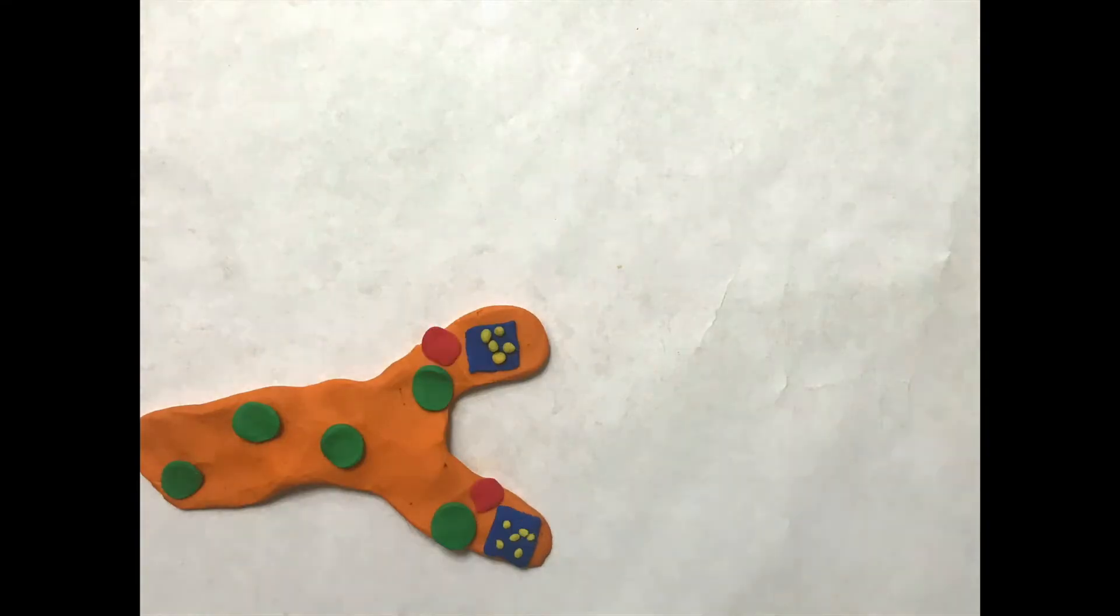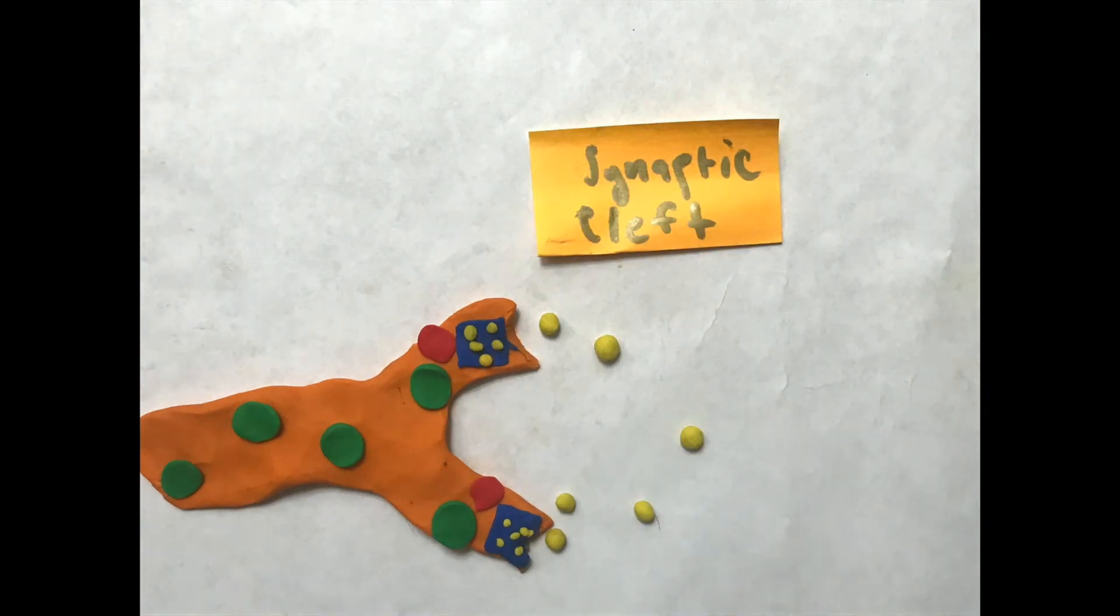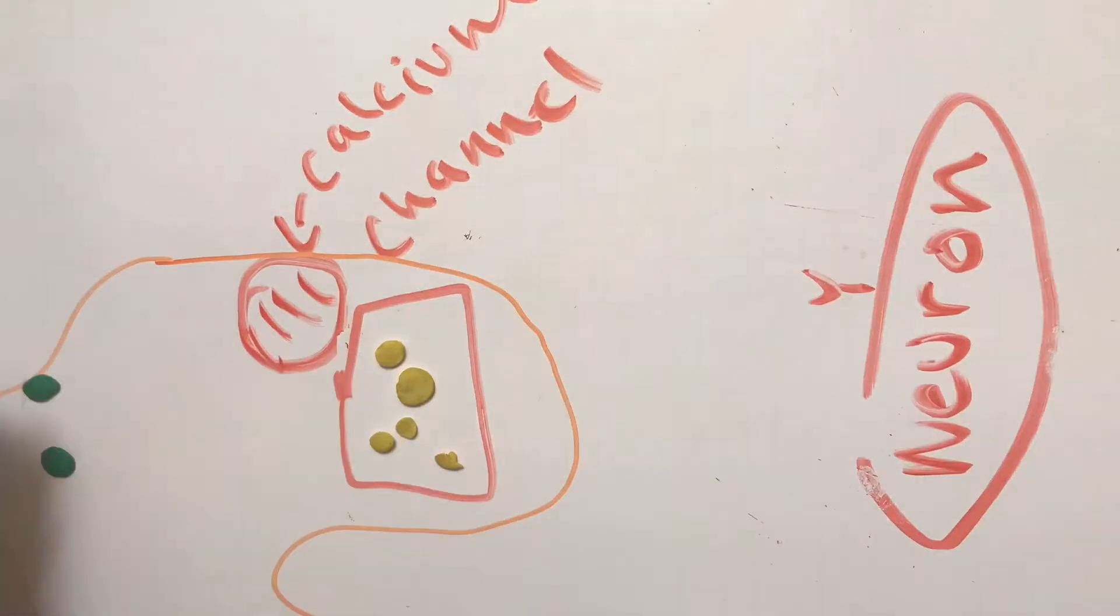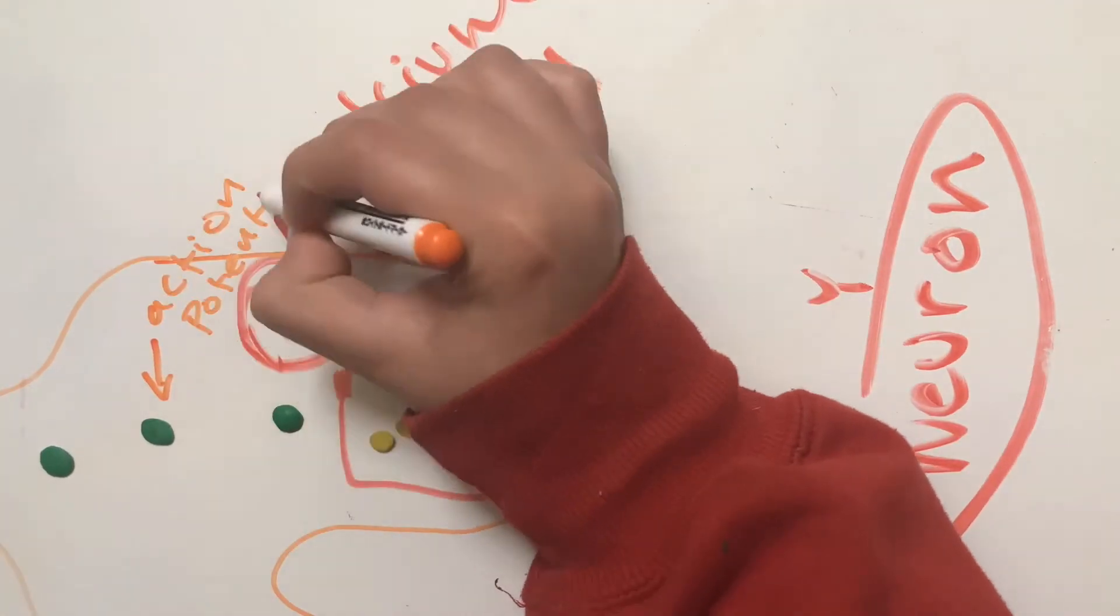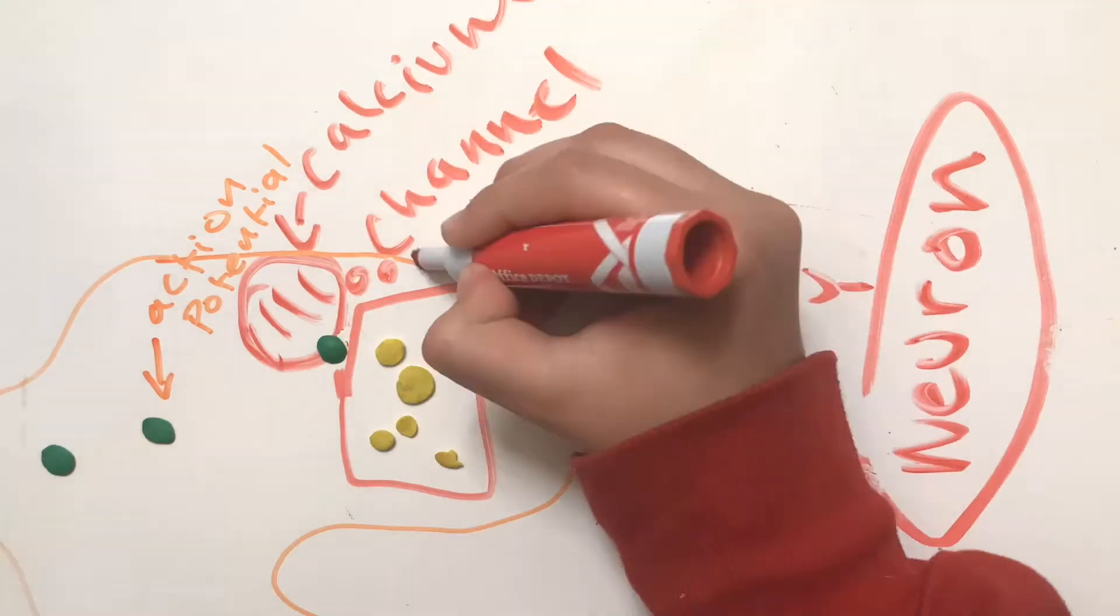Calcium channels around the vesicles are used to release the neurotransmitters when there is a message needed to be conveyed. The action potential will open the calcium channels, allowing calcium to flow through the axon terminals.